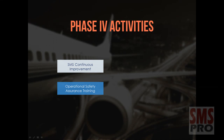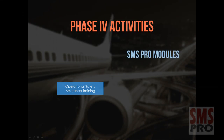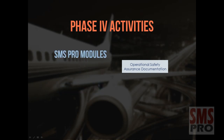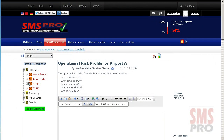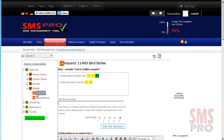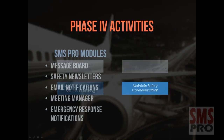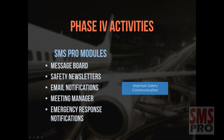Training necessary to provide Operational Safety Assurance can be managed and documented using the Training and Qualifications module and the Safety Survey. The SMS Pro Proactive Hazard Analysis tool helps achieve documentation relevant to Operational Safety Assurance by systematically identifying and documenting hazards, risks associated with those hazards, and control measures for each risk. Throughout the course of your implementation, the following modules maintain safety communication: the Message Board, Safety Newsletters, Email Notifications, Meeting Manager, and Emergency Response Notifications.